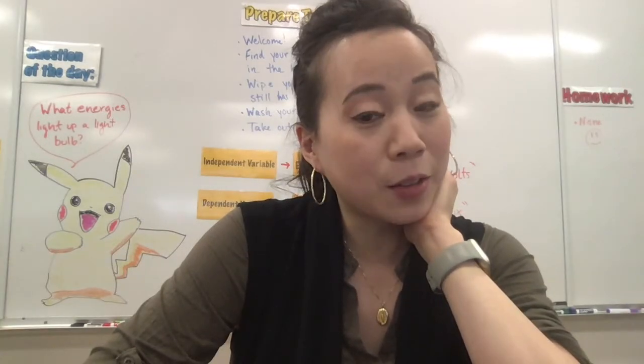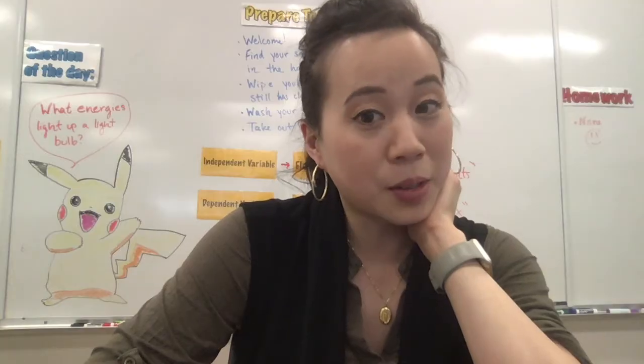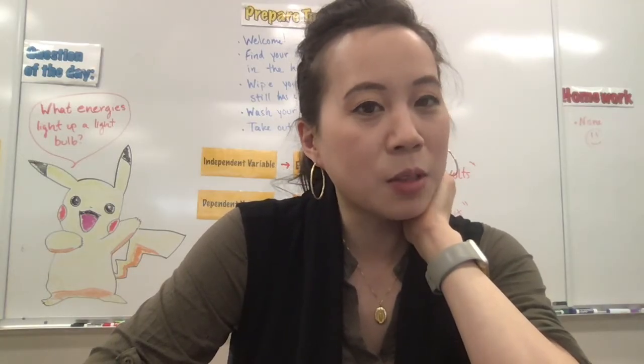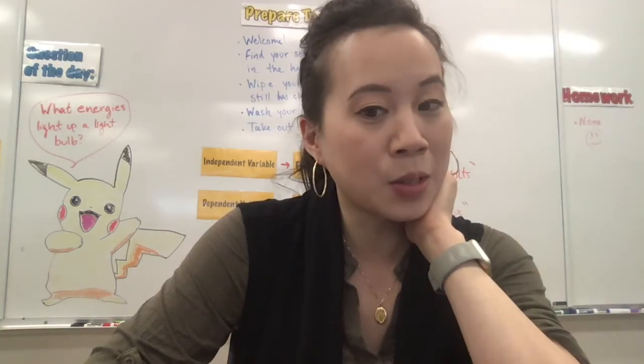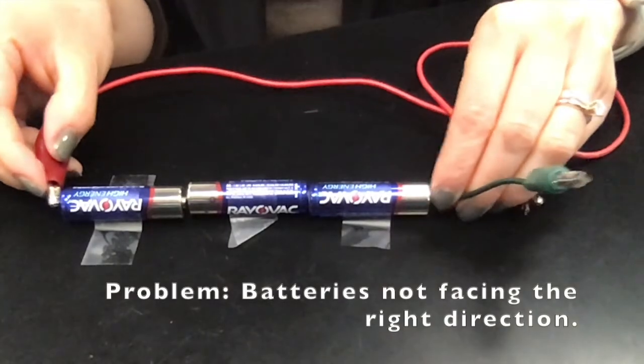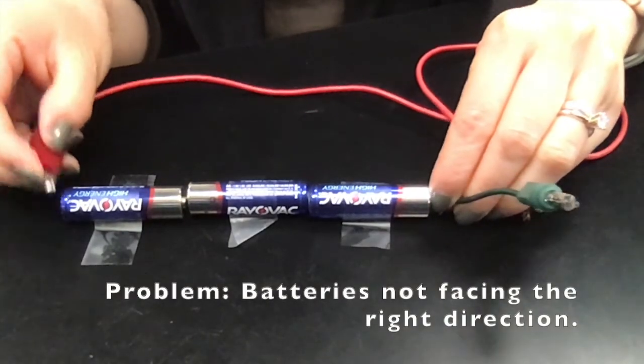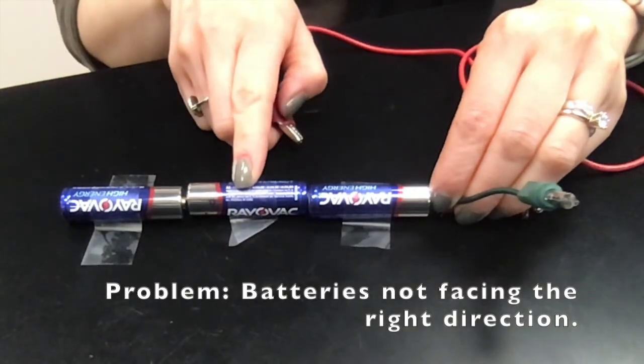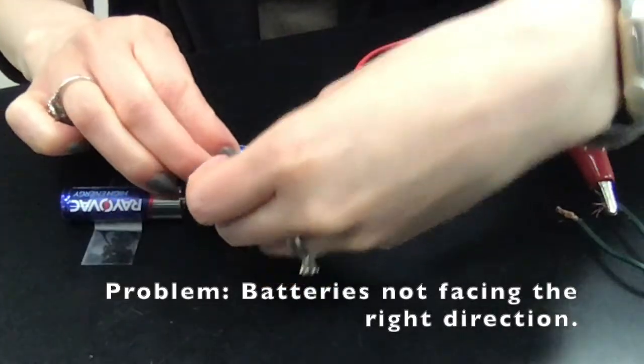The lab skill for this particular lab was to be able to build a circuit. And we want to review with you some of the common mistakes that we saw when students were attempting to build a circuit. One of the problems that we noticed when students tried to set up the circuit is they did not have their batteries all facing the right direction. They all need to face the same direction. Notice the middle one is turned the wrong way.